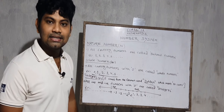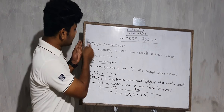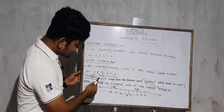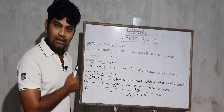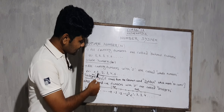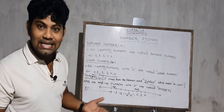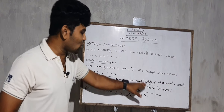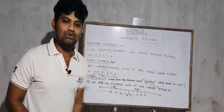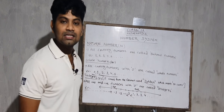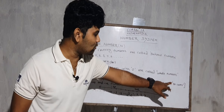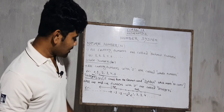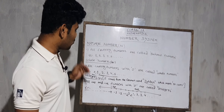Integers are denoted by Z. Here the first letter of 'integers' is I, but we take Z. Why Z? Z comes from the German word 'Zahl', which means 'to count'. That's why we use Z for integers. So we have natural numbers, whole numbers, and integers.